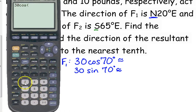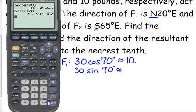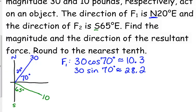So, 30 cosine of 70, 30 sine of 70. I might as well go ahead and round. It does say round to the nearest tenth. So, we've got 10.3 and 28.2. Again, make sure that it makes sense. It does make sense that the vertical component is larger than the horizontal component because we're only 20 degrees from north. It means we're more vertical than we are horizontal.